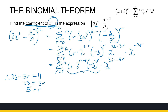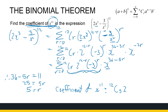So I have established the value of r = 5, and that was what I was looking for. The question asks: what is the coefficient of x^11? The number in front is the coefficient. So it's 12C5 · 2^7 · (−3)^5. That is my coefficient. Don't include x^11 — the coefficient is the number in front of x. That will be the coefficient of x to the power 11.